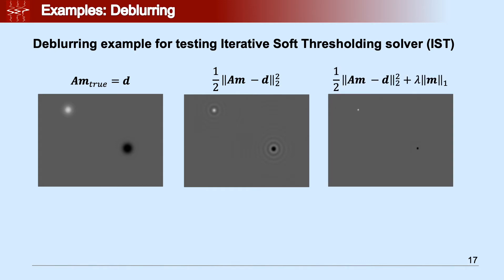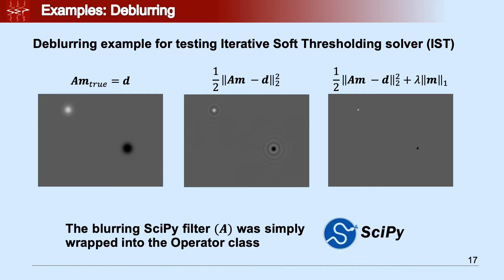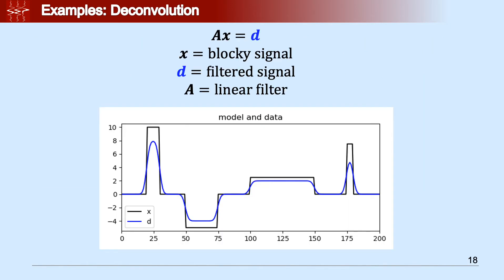On the other hand, if we solve and apply the iterative soft thresholding to solve the problem shown here on the right, you can see the solution is way more sparse compared to the middle panel. And here is interesting because to create the A filter, we just use SciPy and bind it, or wrap the Gaussian filter into the operator class.